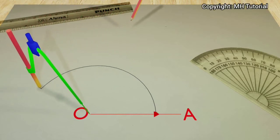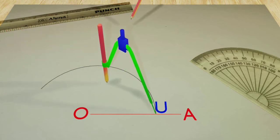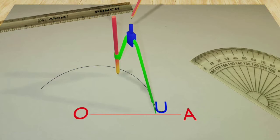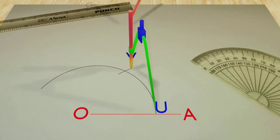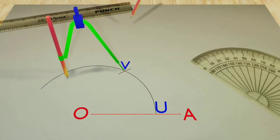This arc touches the line OA at point U. Then another circle arc of same radius is drawn. This circle arc intersects the previous one at point V. Thereafter, point V is made centered to draw another circle arc of equal radius, this time slightly larger. Let this arc meet the first one at point W.